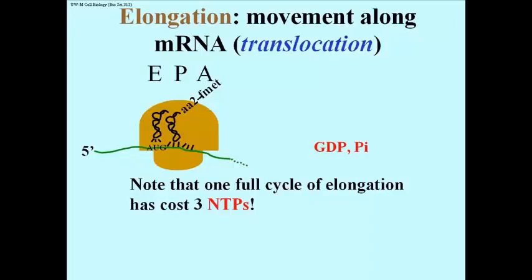Note that one full cycle of elongation has actually cost the equivalent of 3 ATPs — 3 nucleotide triphosphates. Be careful when you think about this. There are several GTPs involved in first steps and last steps, but to add each amino acid to a growing chain will cost 3 nucleotide triphosphates, the equivalent of 3 ATPs.